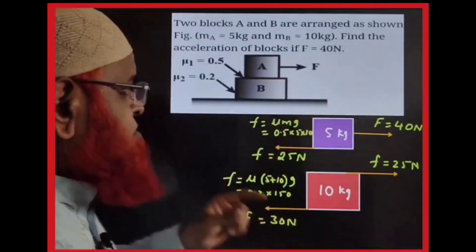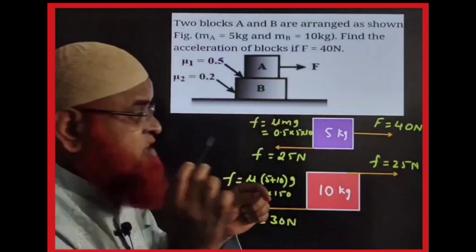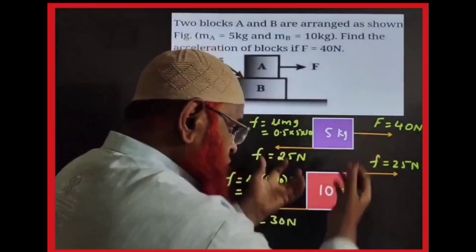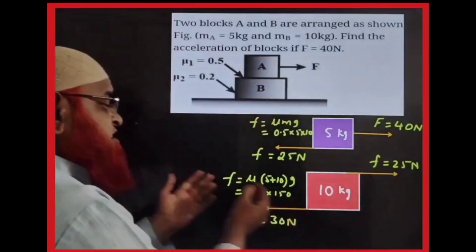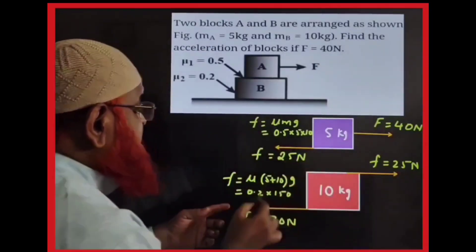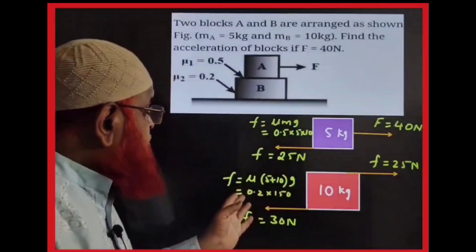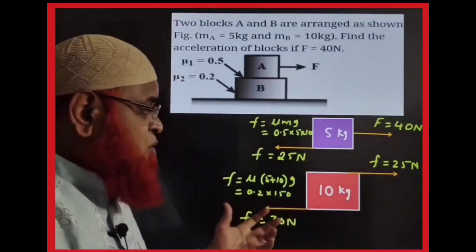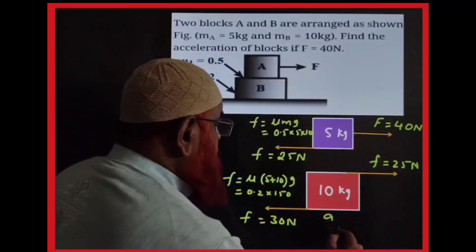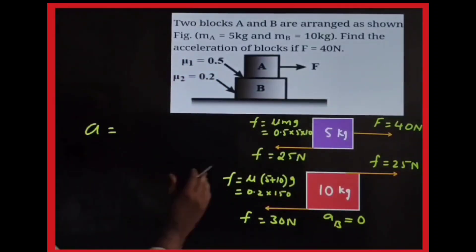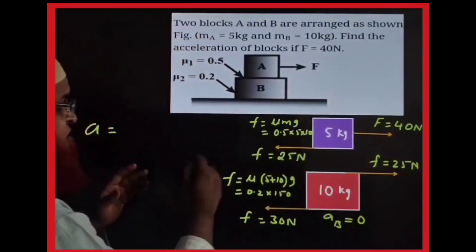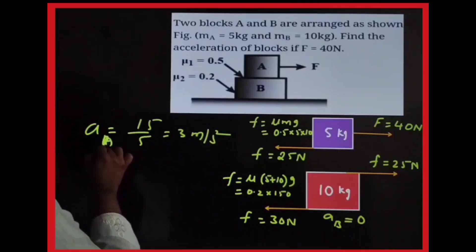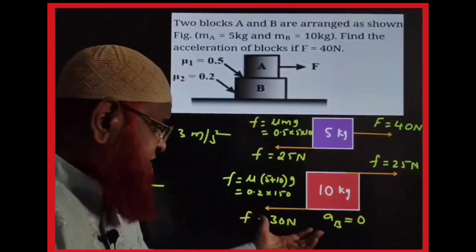Another block-over-block problem: 40 newtons acts on the upper block (mass 5kg), μ=0.5 giving limiting friction 25 newtons. This 25N acts as driving force on lower block, but the lower block's backward friction = μ(m1+m2)g = 0.2×15×10 = 30 newtons. Since driving friction (25N) < backward friction (30N), lower block acceleration b = 0. Upper block acceleration a = (40−25)/5 = 15/5 = 3 m/s².